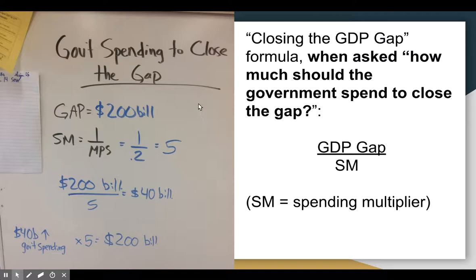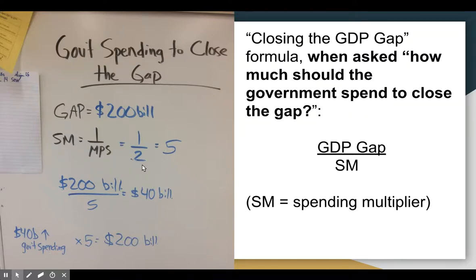Now the next step — the question asks: by how much should the government change its spending in order to close a $200 billion gap? Since the question is asking about spending, we want to figure out the spending multiplier, which is one over the MPS. From our previous slide, the MPS was 0.2, so one over 0.2 is five — 20 cents goes into a dollar five times. Our formula for how much the government should change spending is the GDP gap over the spending multiplier: $200 billion over 5, which gives us $40 billion.